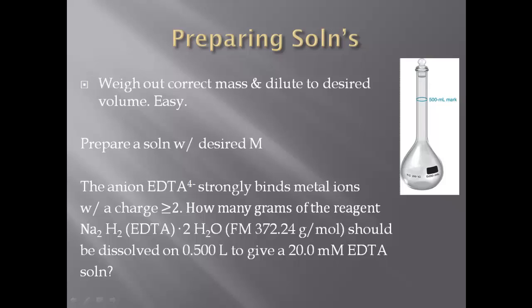The problem reads: the anion EDTA strongly binds metal ions with a charge greater than 2. How many grams of the reagent Na2H2EDTA dihydrate with a formula mass of 372.24 should be dissolved in a 0.5 liter flask to give a 20 millimolar EDTA solution? It sounds really difficult, but it's not. All they want to know is how many grams of that reagent should be dissolved in 0.5 liters to give 20 millimolar EDTA.